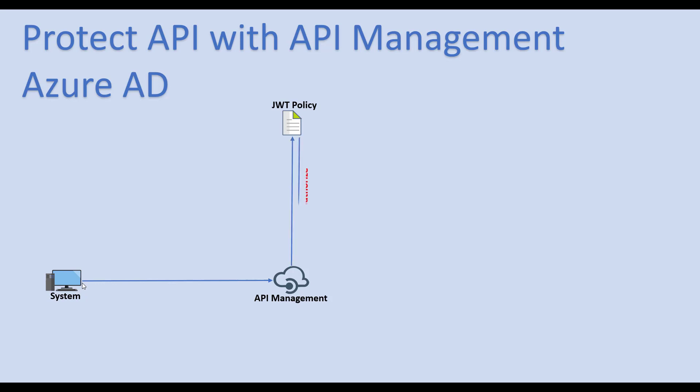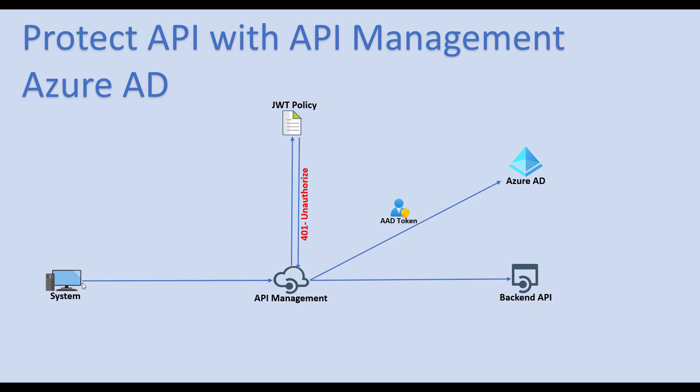If the token is invalid, API Management throws a 401 unauthorized error. To validate the Active Directory token, API Management validates the JWT token against Active Directory for your backend server. The entire configuration is done at the API Management layer — no changes are made to the source code at the backend API.